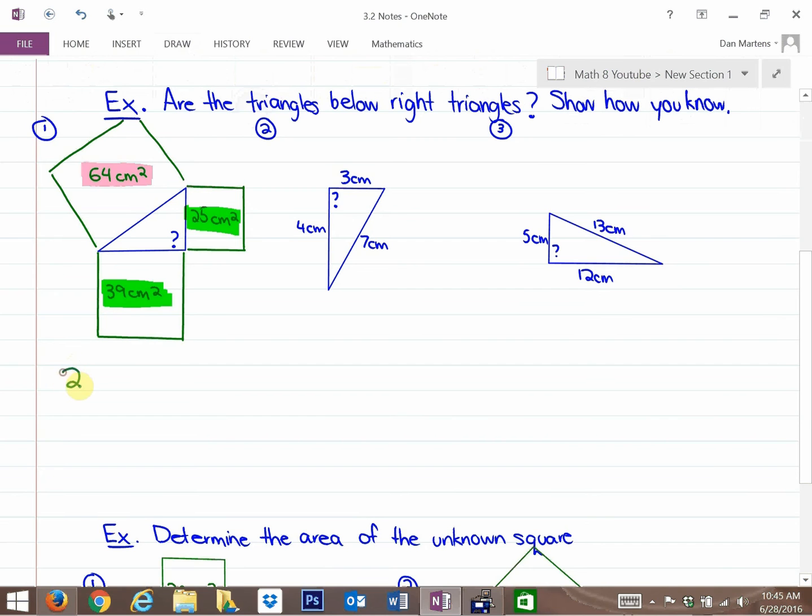So what you're asking yourself is, is 25 plus 39 equal to 64? If it is, then this is a right triangle. And 25 plus 39 indeed is 64. So yes, it is a right triangle.